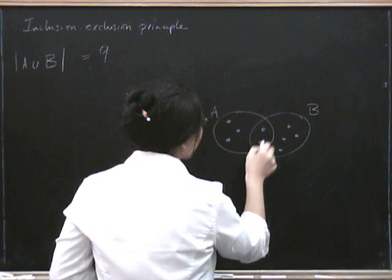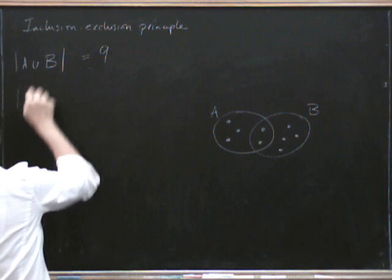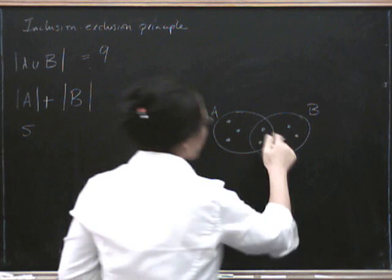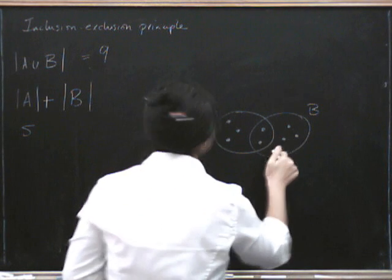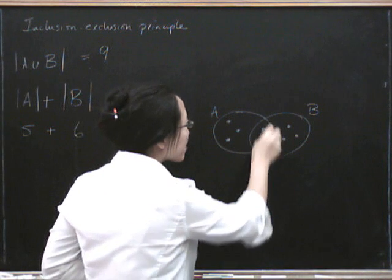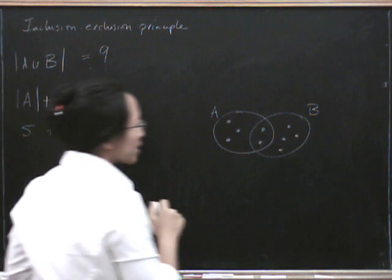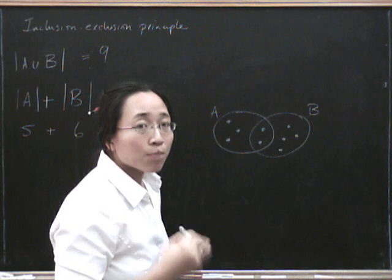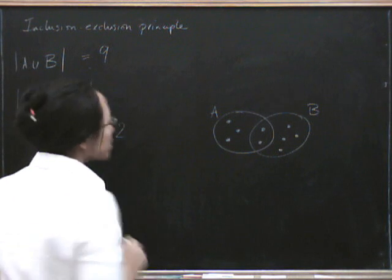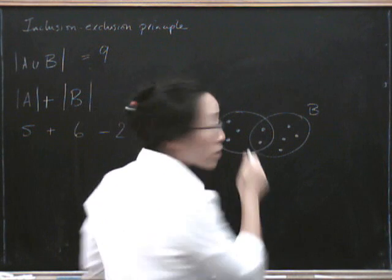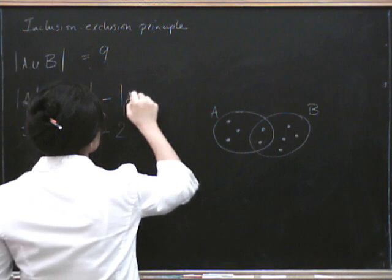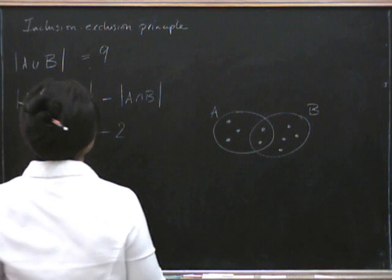Because if I count one, two, three, four, five elements in A — so that's five — and then there's one, two, three, four, five, six elements in B, but I've counted the elements in the intersection twice. So how many elements are there in the intersection? There are two. So I have to take that number off again, because those are the ones I counted twice. What I've got to do is subtract the number of things in the intersection.